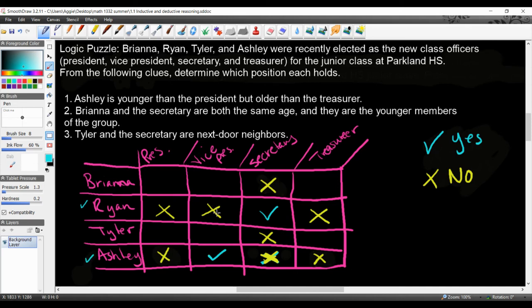The way these puzzles work is once you get one, you can kind of cross out the ones across and the ones going up and down vertically. That gives more spots crossed out, which gives us less things to guess or think about. Now that we know that Ashley is the vice president, we know that Tyler's not the vice president and Brianna is not the vice president either.